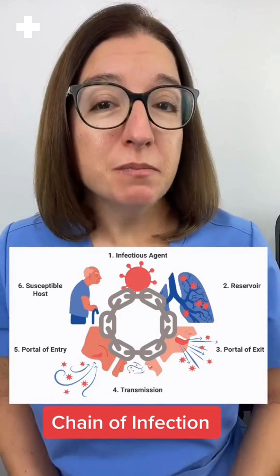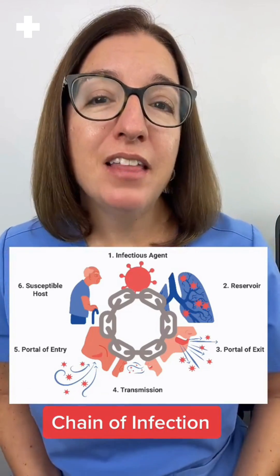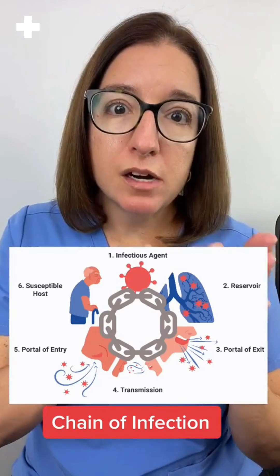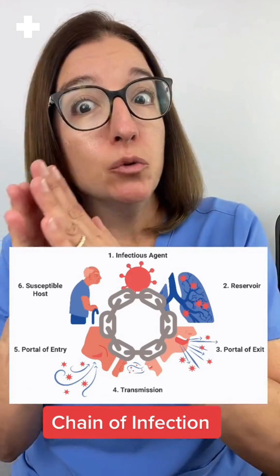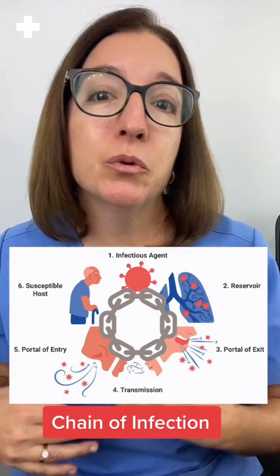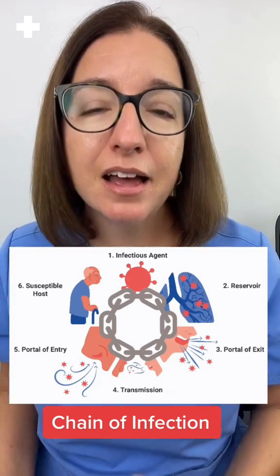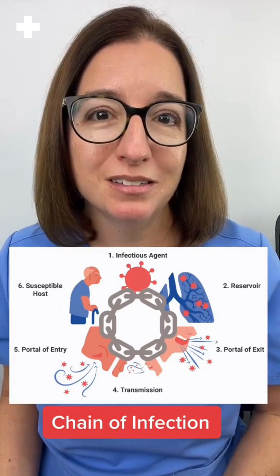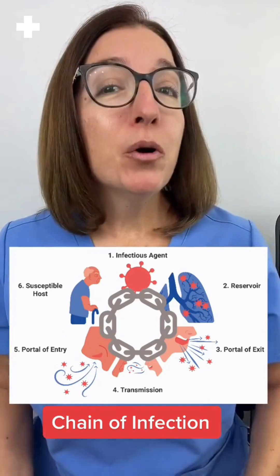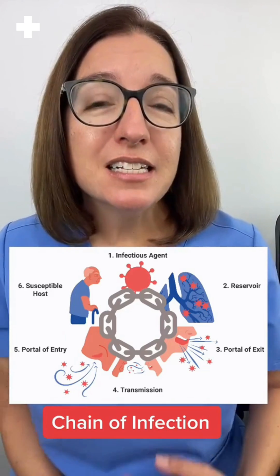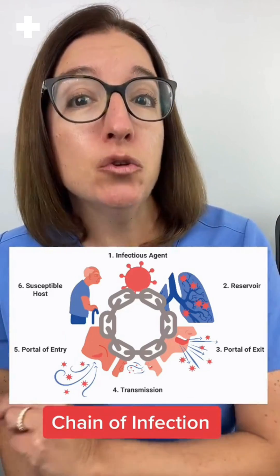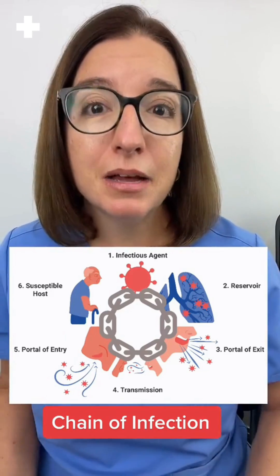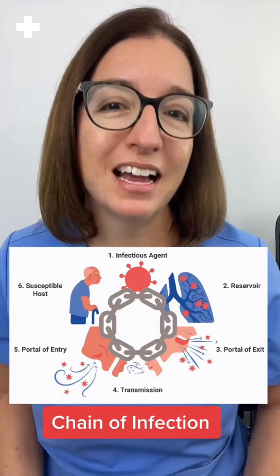The mode of transmission is how the agent goes from the reservoir to the new host, and this can be through direct contact or through droplets, for example. The portal of entry is how the agent gets into the new host, and this can be the same as the portal of exit.